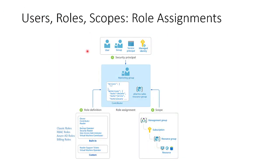Access is controlled for users by assigning roles for those users for particular scopes. A role definition is a selection of permissions — it is typically just called a role. A role definition lists the operations that can and cannot be performed. Roles can be applied to users or, more generally, security principals, which include, for example, groups.